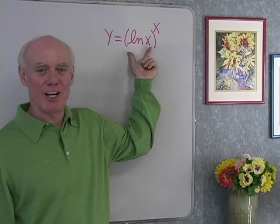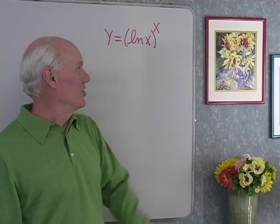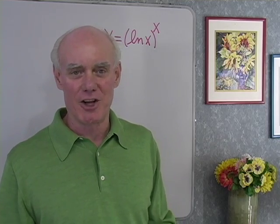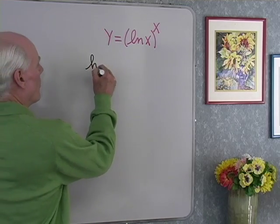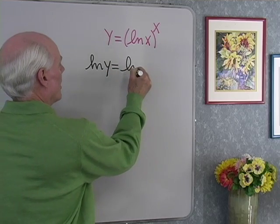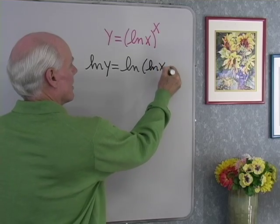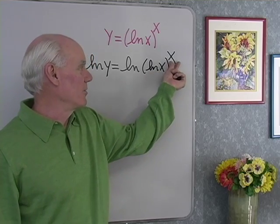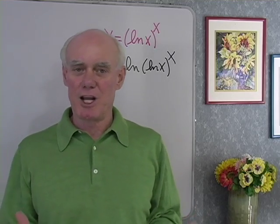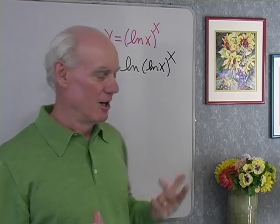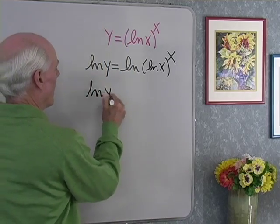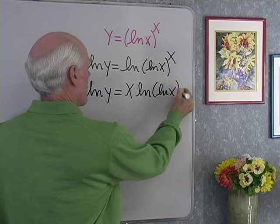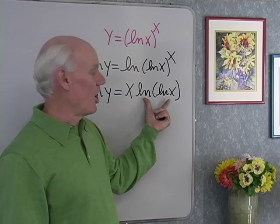Let's try one more problem — log x to the x. Well, it's the same type of problem: our exponent contains the variable, so we're going to have to take the log of both sides. So when I do that, I get log y is equal to the log of the log of x, raised to the x. It doesn't make any difference what this argument is — it's raised to the x power, and my properties of logarithms allow me to take that exponent and rewrite it as a coefficient. So log y is equal to x log of log x.